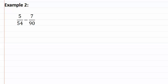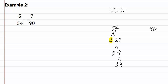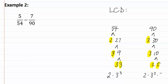Let's look at example two: five fifty-fourths minus seven ninetieths. Once again, our denominators do not match, so we must find the least common denominator using prime factorization. We have fifty-four and ninety. Fifty-four is two times twenty-seven, which is three times nine, which is three times three. And ninety is three times thirty, three times ten, and two times five. Writing out their prime factorizations, we have two times three to the third, and two times three squared times five.